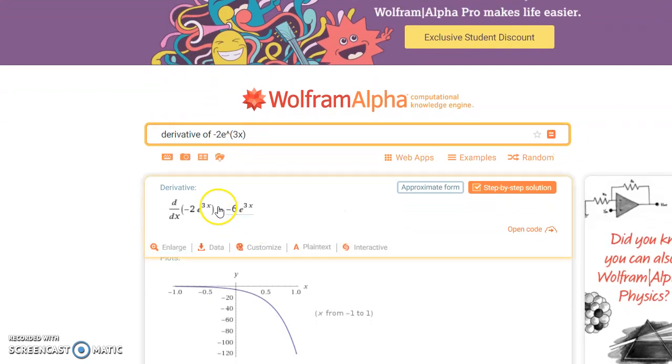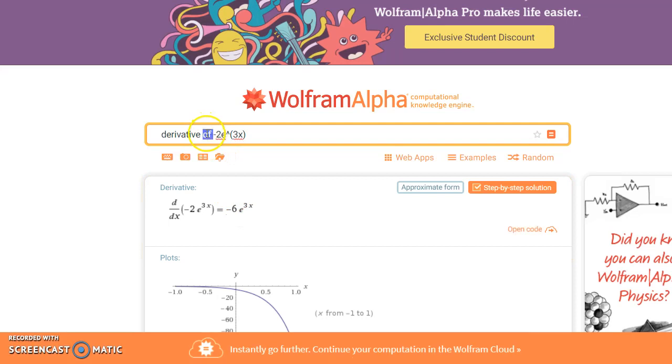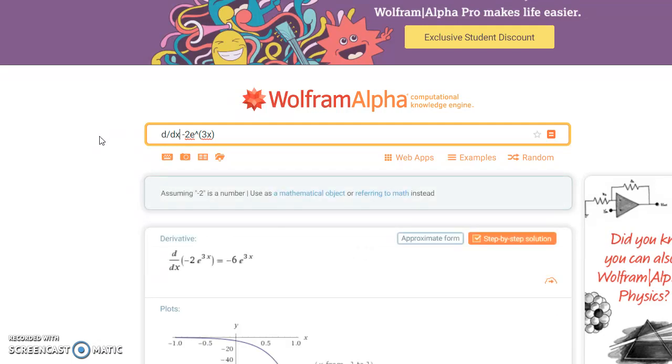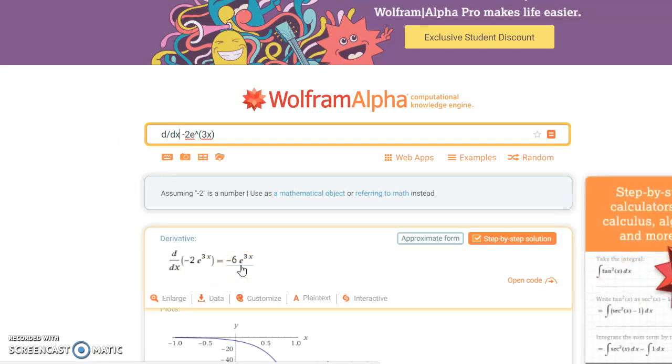And that would give us negative 6 e to the 3x as that derivative. If we wanted to use a slightly more mathematical command or something that's actually a little bit shorter to type, we could also type d over dx. So that notation just means take the derivative of this function with respect to x and we generate that same result. So our derivative in this case would be negative 6 e to the 3x.